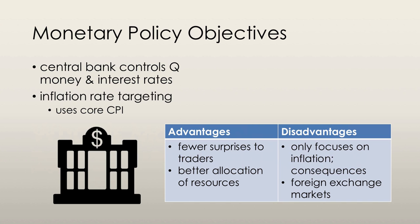Inflation rate targeting is not a perfect method, however. By focusing on inflation, central banks sometimes allow unemployment to rise or the real GDP growth rate to suffer. This is the trade-off of using inflation rate targeting. Exports could also suffer when this strategy is used because of the impact monetary policy has on foreign exchange markets.